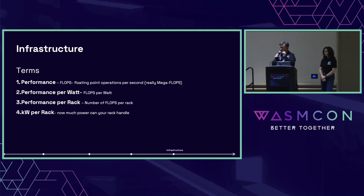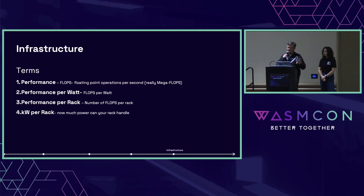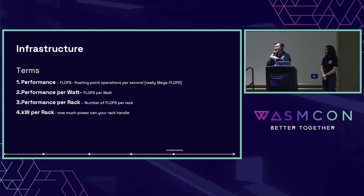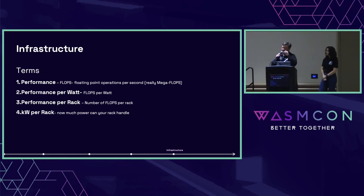The next thing is performance per rack — how many servers you can put in there and what they're made of, expanding that server view to a rack level. And then you can take that to the data center level. The last metric is kilowatts per rack. As I mentioned at the beginning, most existing data centers have a rack of about 12 to 14 kilowatts. But now because of GPUs, AI, and x86 servers getting so massive and using so much energy, they're putting in those 40 to 60 kilowatt racks just to handle them.